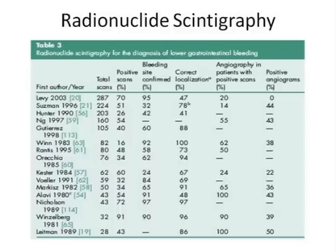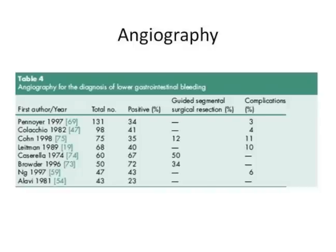For radionuclide scintigraphy, positive scan percentage varies quite a bit, and the bleeding site confirmed by this test is very variable—it depends primarily on the disease process causing the bleeding. For angiography, the positive percentage varies from the low 20s to the low 70s to high 60s, and the reason depends on whether the lesion is in the small bowel or in the large bowel.